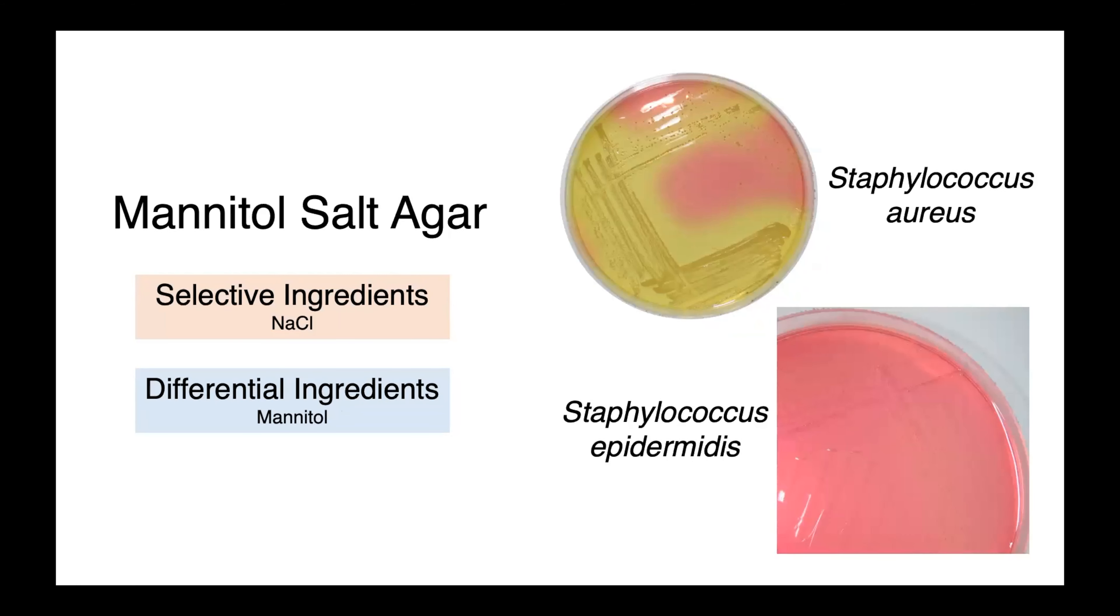Here we have mannitol salt agar, also selective and differential. Mannitol salt agar contains high concentrations of sodium chloride, which allows only the growth of halophilic organisms. And it differentiates based on an organism's ability to ferment mannitol.